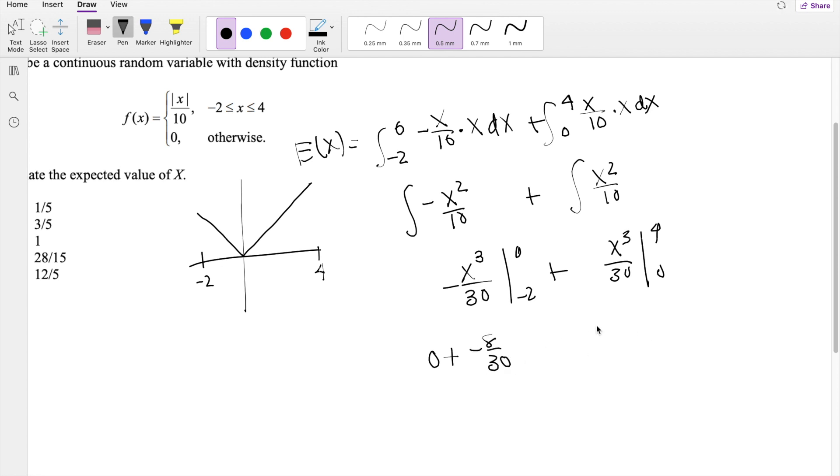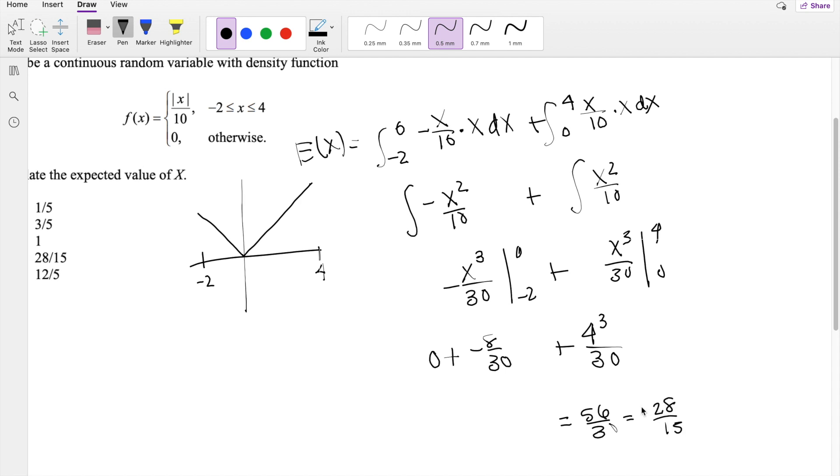plugging in the upper limit, you get 4 cubed over 30. And then plugging in the lower limit, you just get 0. So this equals 56 over 30, which is also equal to 28 over 15, our answer D.